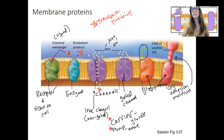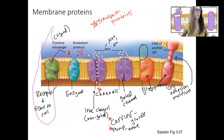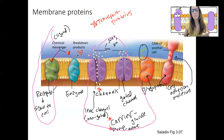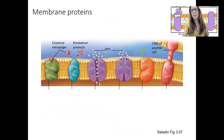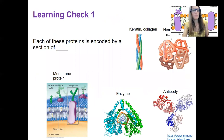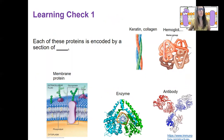The most important for this class is going to be our receptors — and I mean most important for this class, not in biology overall. Receptors will be important, and the rest of this week will be focused on different types of transport proteins, getting things in and out of the cell. We're going to do a first learning check: look at the different types of proteins — membrane proteins like we just saw, and other proteins too. Each of these proteins is encoded by a section of what? This is review from the previous lecture on gene expression.